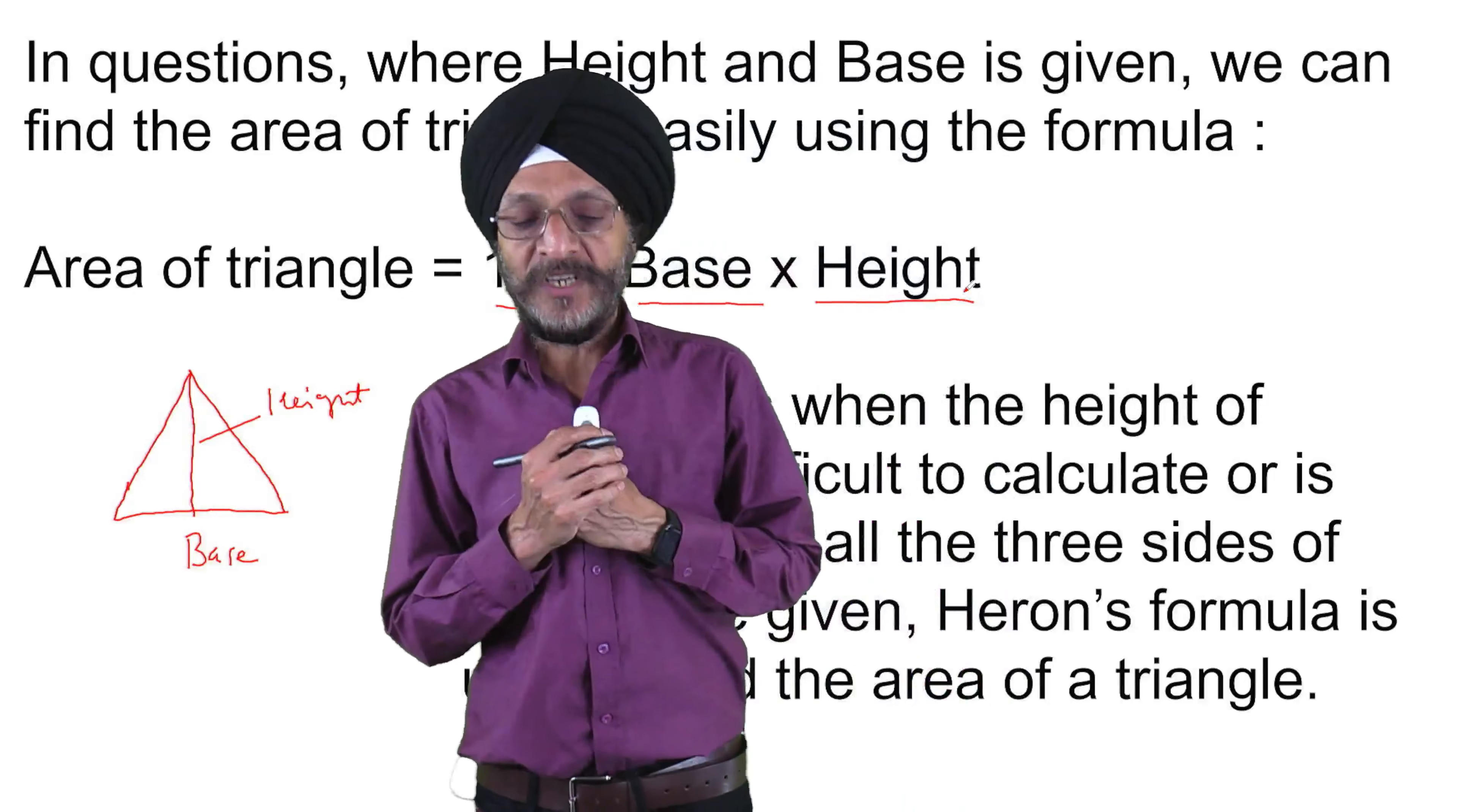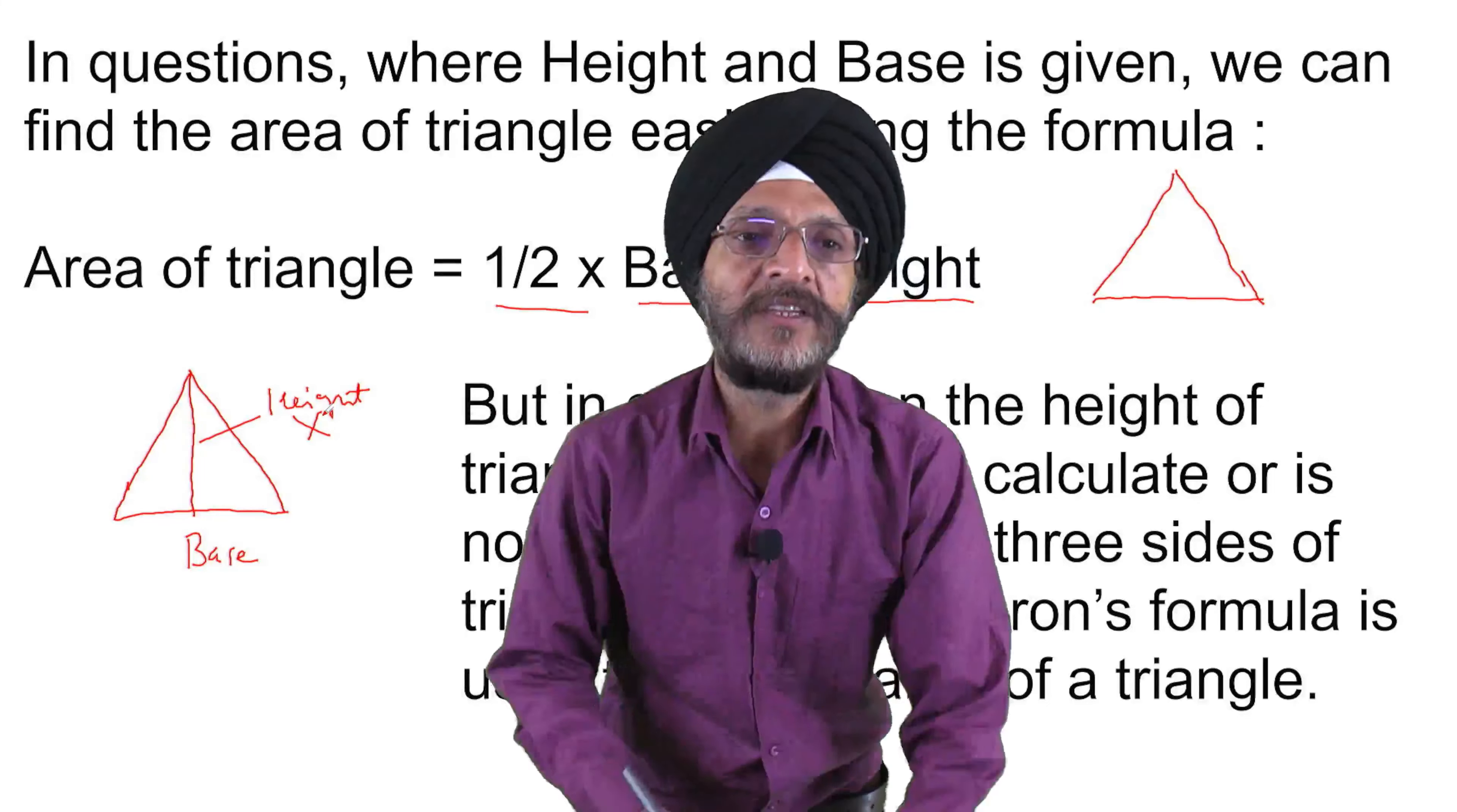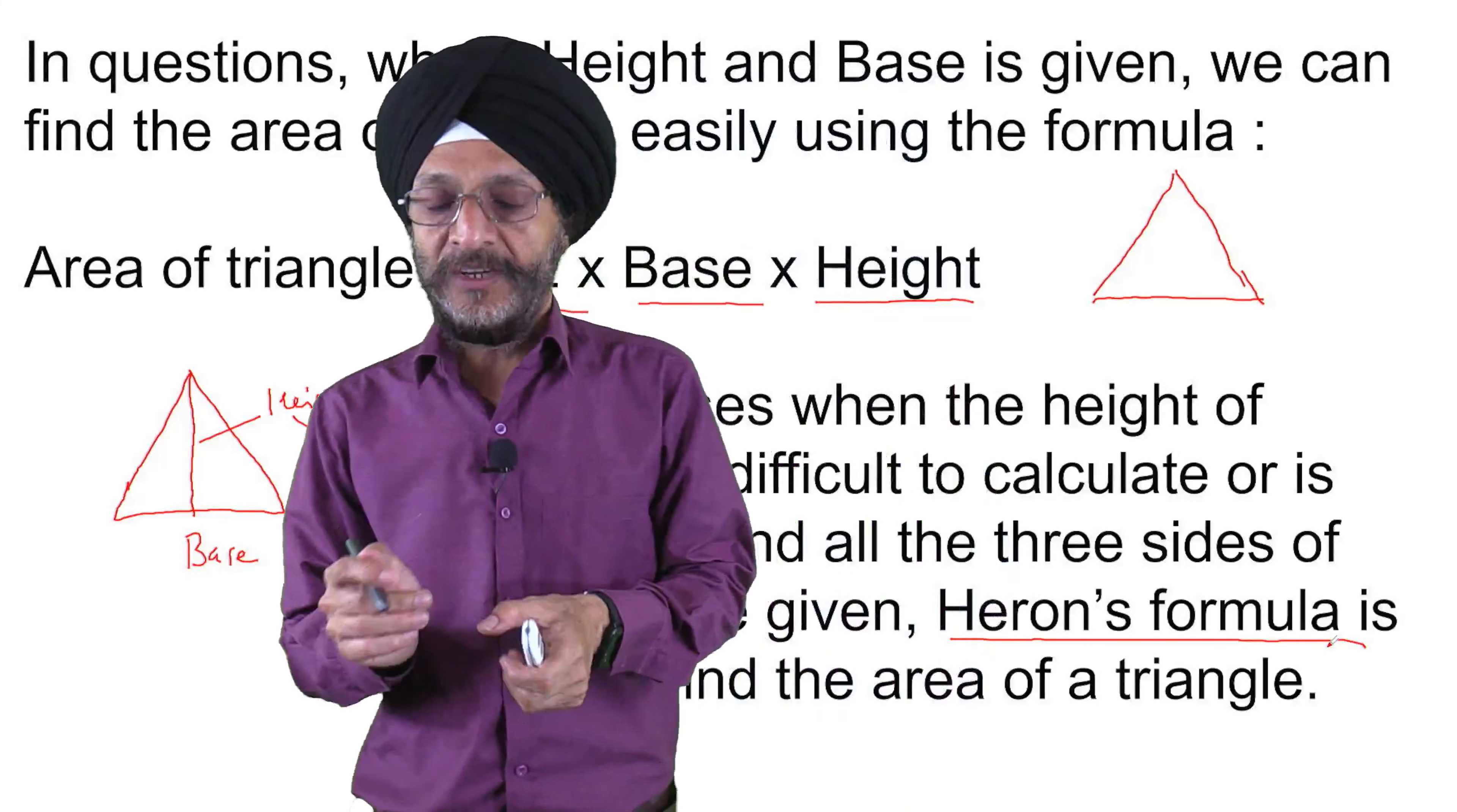But in the case of those triangles where height is either not known to us or where it is difficult for us to calculate the height, and when all the three sides of the triangle are given, then in that case we can use Heron's formula to calculate the area of triangle.